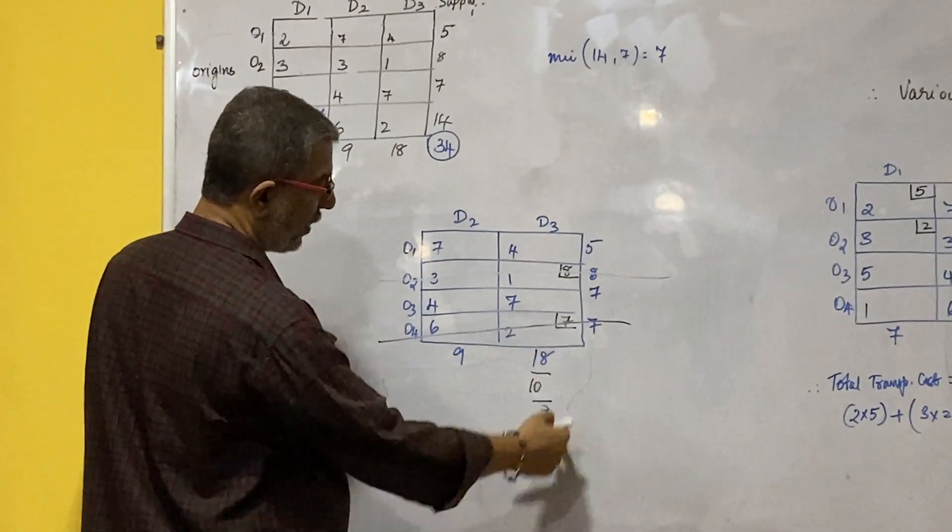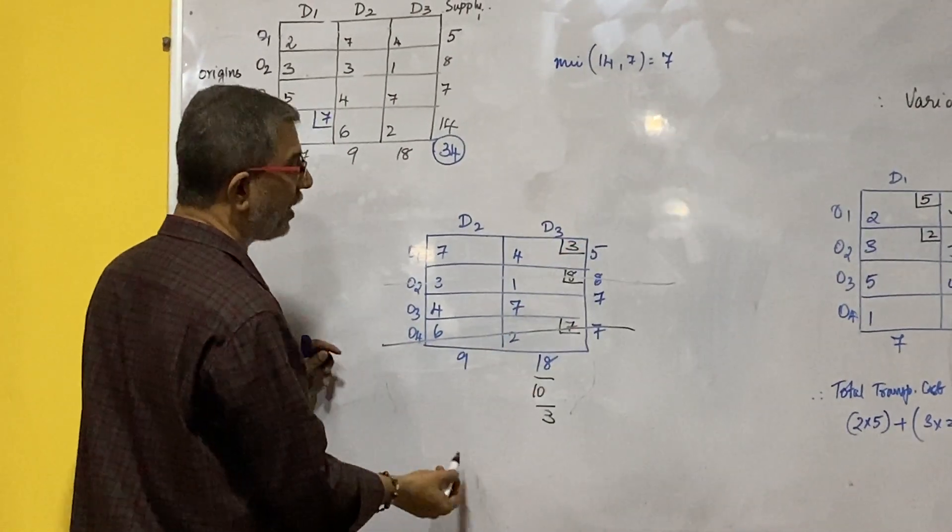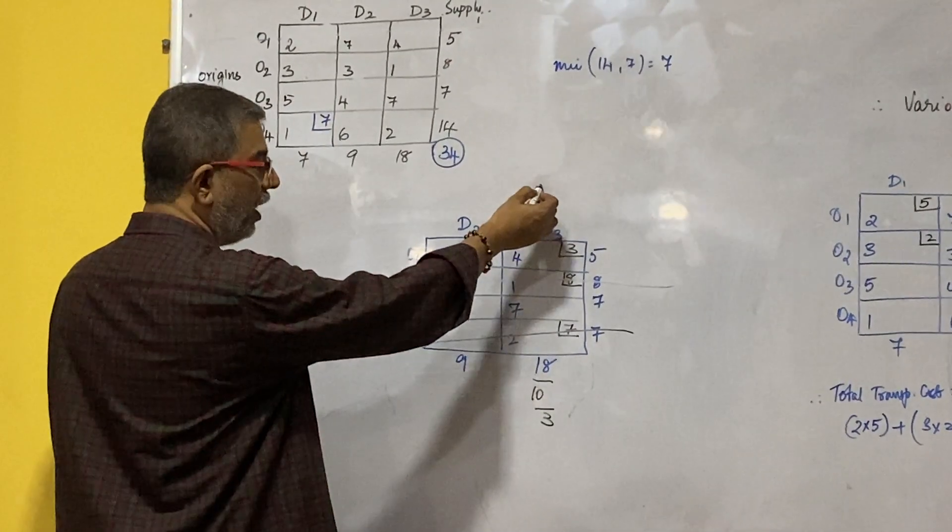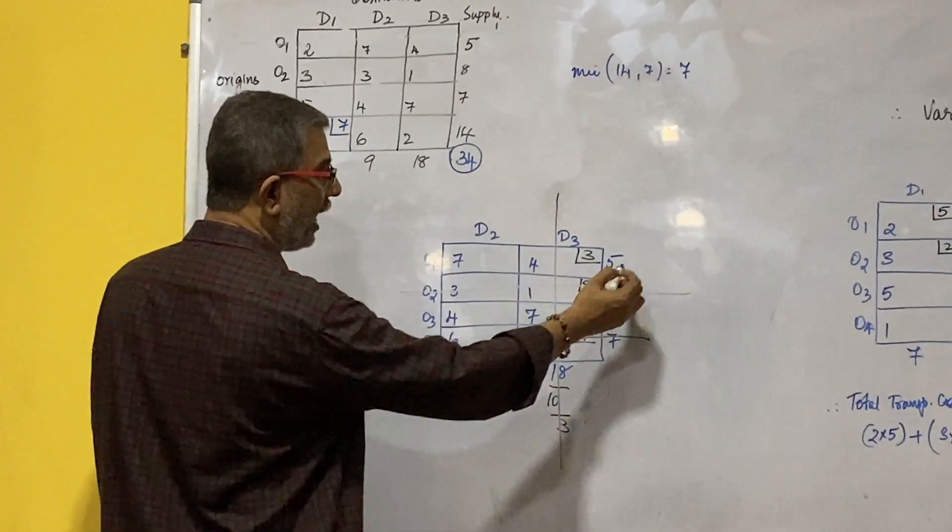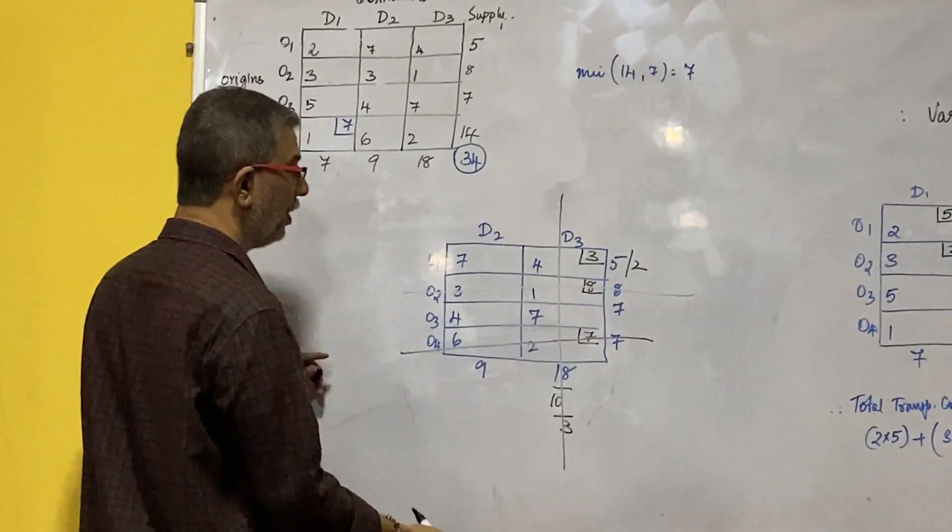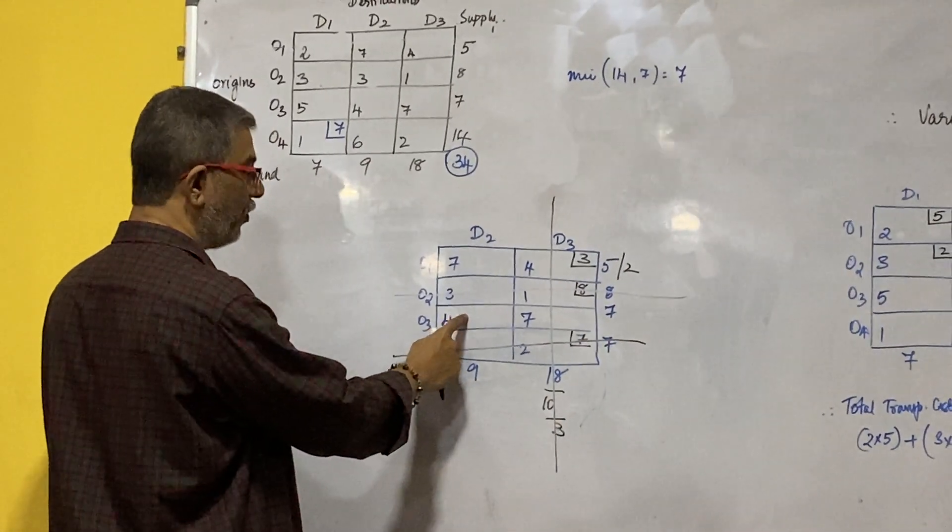5 and 3 compared and 3 will be entered over here. Which row will get removed? Which column gets deleted? D3 column gets deleted and balance over here will be 2. Now again we have 4 over here.